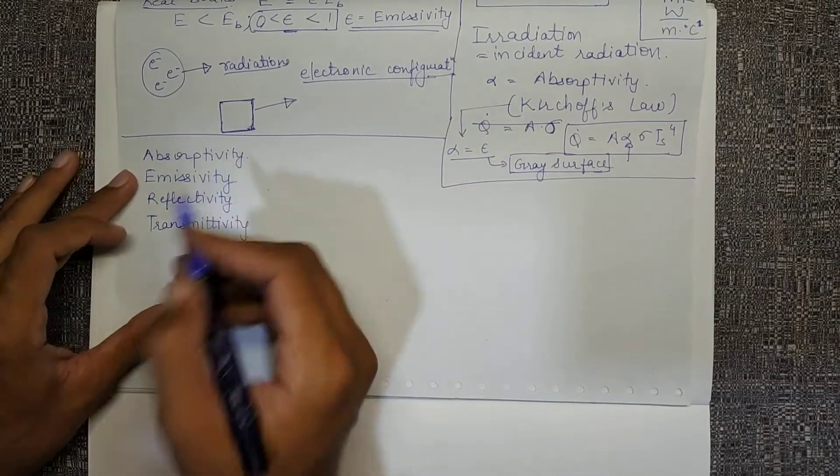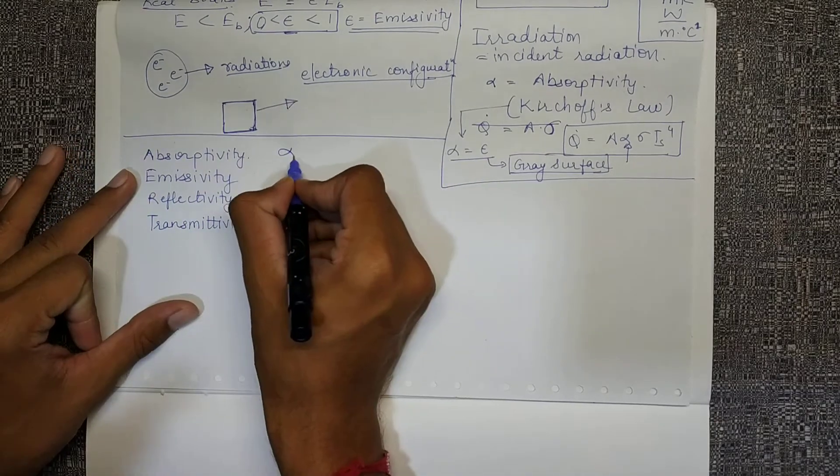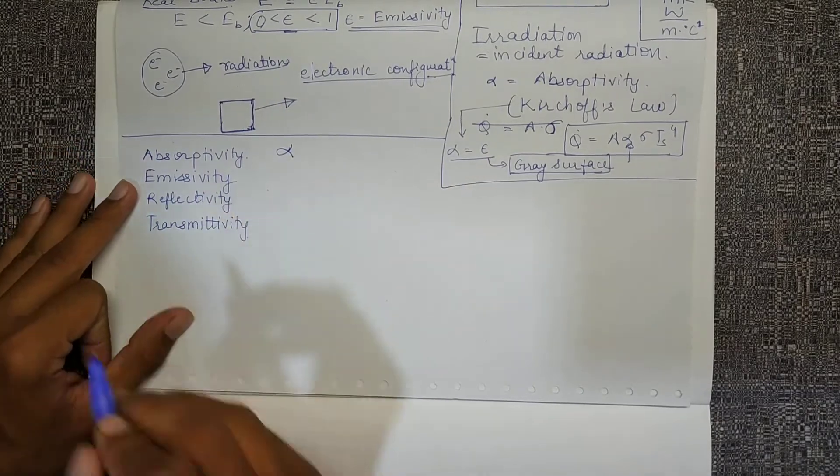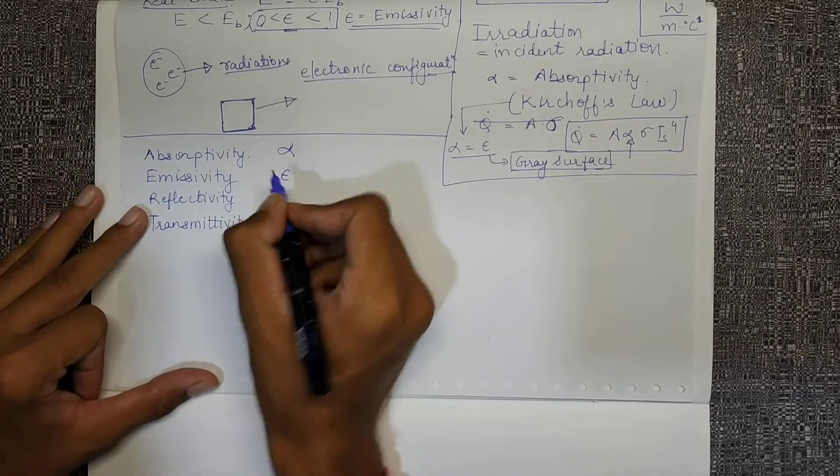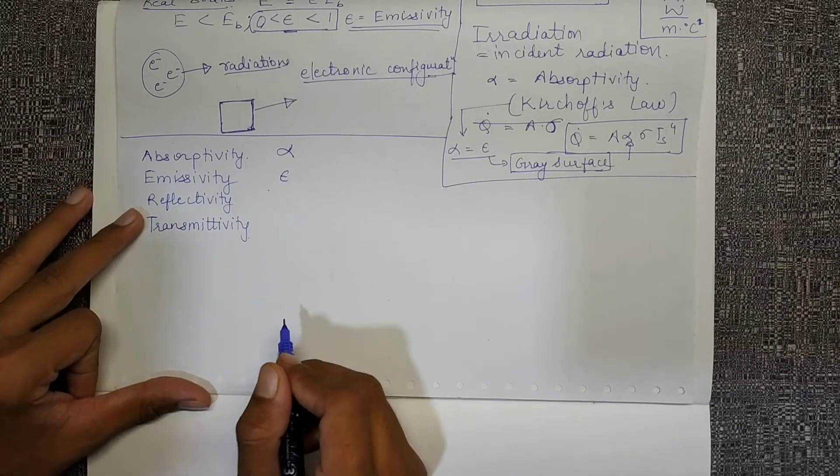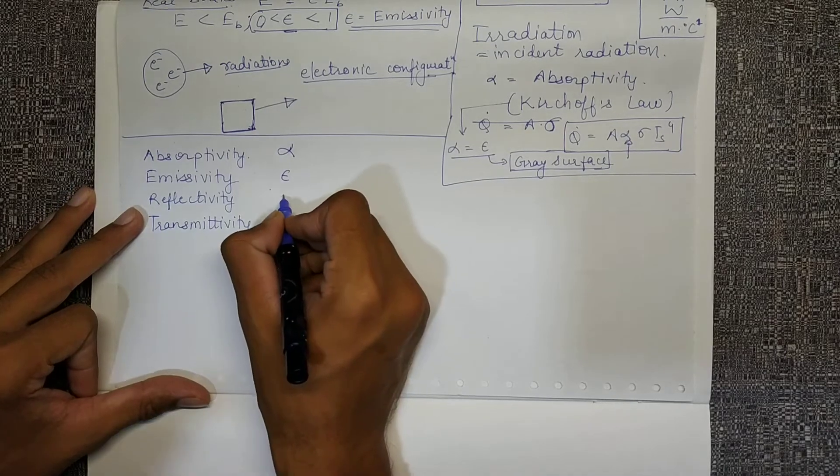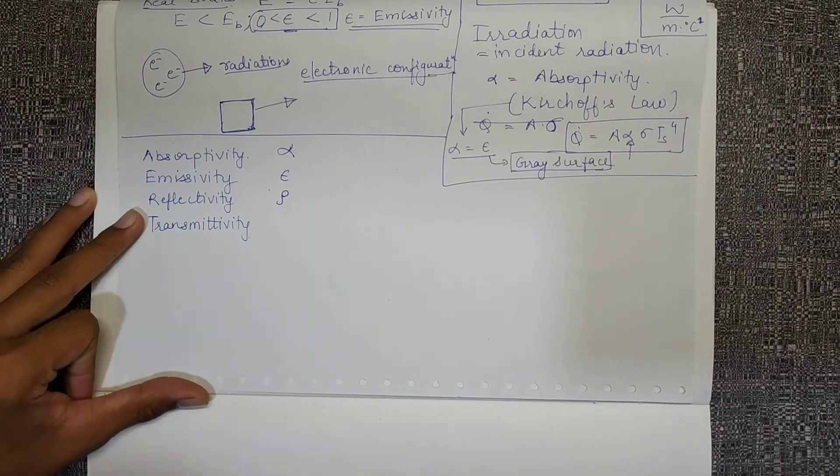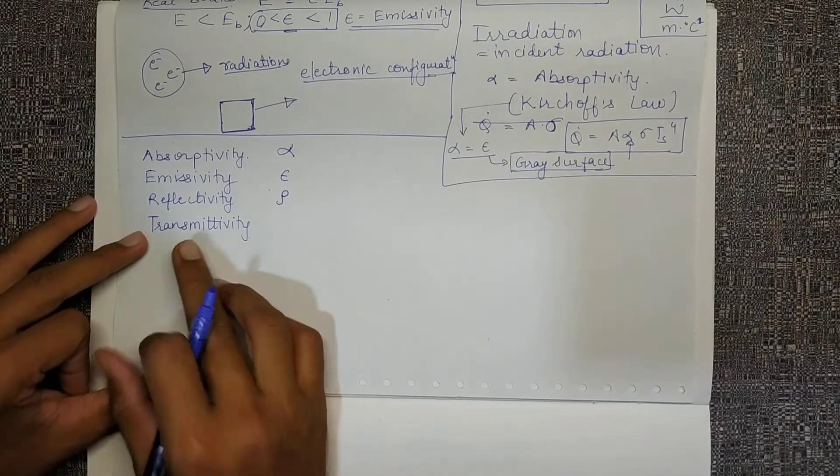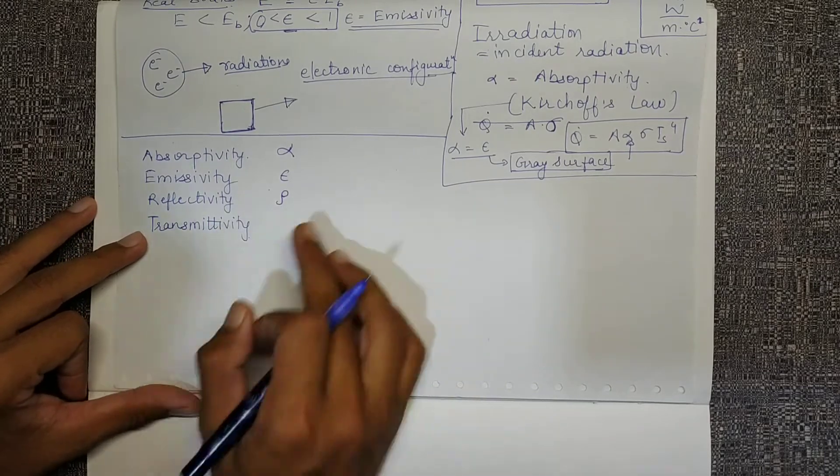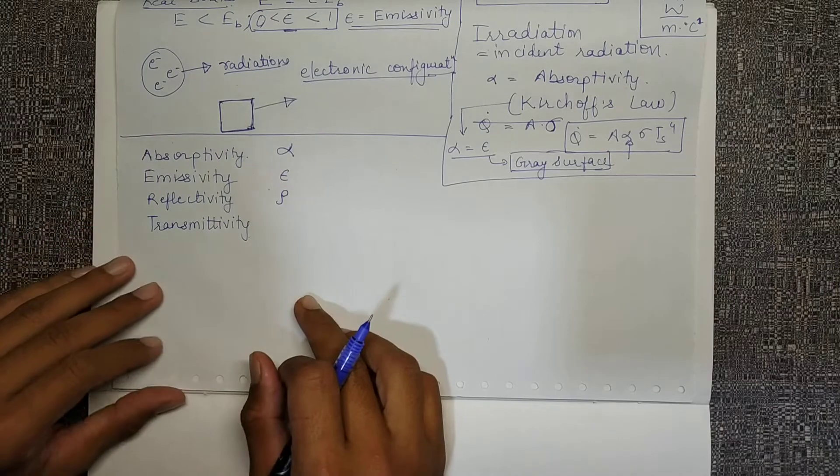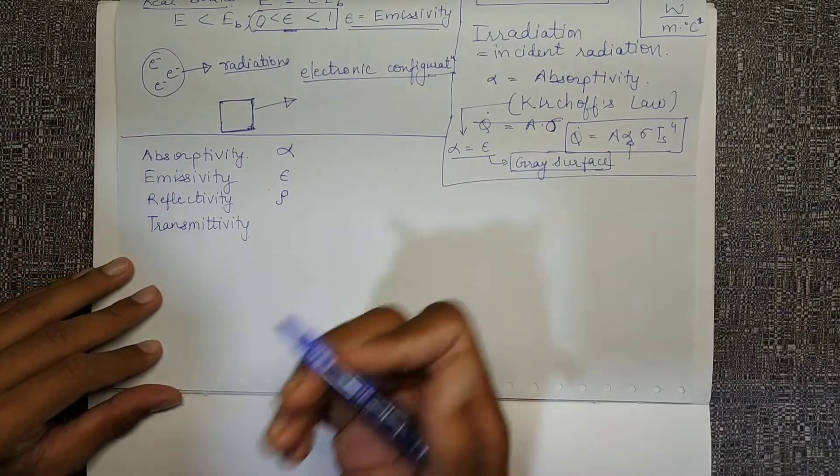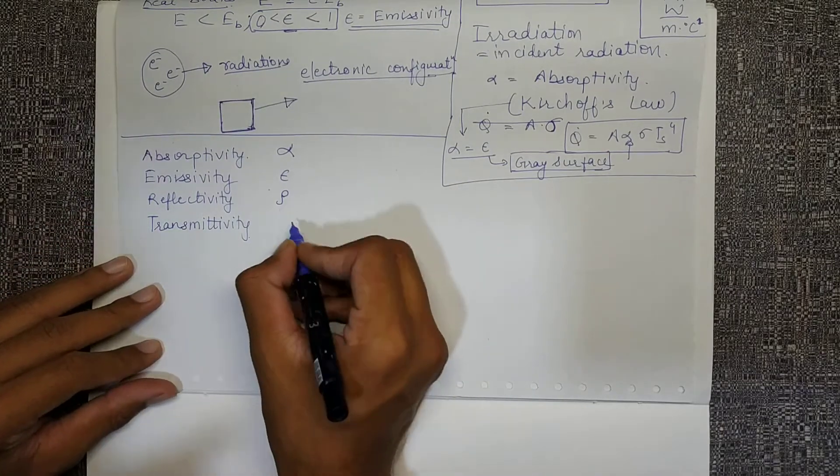For absorptivity or absorption coefficient is given by alpha. The emission coefficient or emissivity is given by epsilon. Reflectivity or reflection coefficient is given by rho, the same symbol as density. And transmissivity or the transmission coefficient is given by tau.